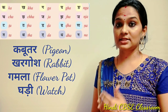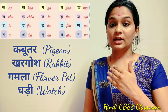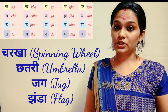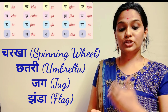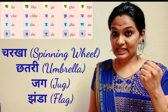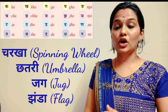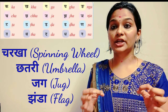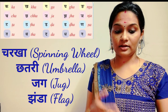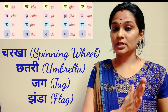Then the next one is Ga — Gamla (flower pot), Gha — Gadi. Then Cha, Chha, Ja, Jha, Nya. Cha for Charkha, Chha for Chatri (umbrella). Ja for Jug, Jha for Jhanda (flag). Then comes Nya.